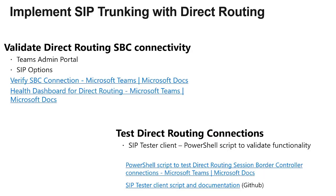Next, we look at validating a direct routing deployment. First, make sure the SBC is connecting properly — you can check the health dashboard for direct routing in the Teams admin portal to get a snapshot of the health of your configured SBCs. Also understand SIP options and what you need to see for a successful pairing between the SBC and Teams. For testing, there's a PowerShell method and a SIP tester client to download and run, which lets you send synthetic test calls rather than just using a test user.